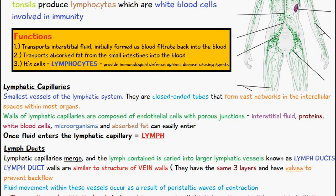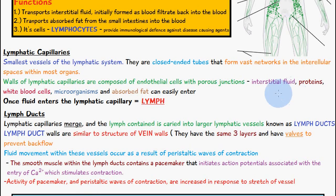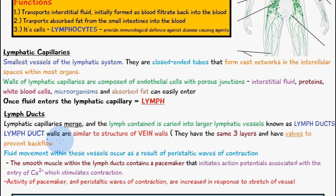The next size up we have lymph ducts. The lymphatic capillaries merge together and the lymph contained is carried into a larger lymphatic vessel known as a lymph duct. The lymph duct walls are similar in structure to the vein wall — they have the same three layers and they have valves in place to prevent backflow of lymph.